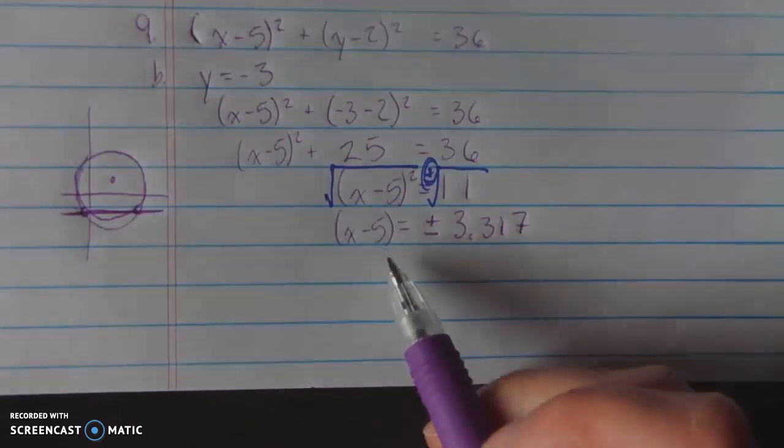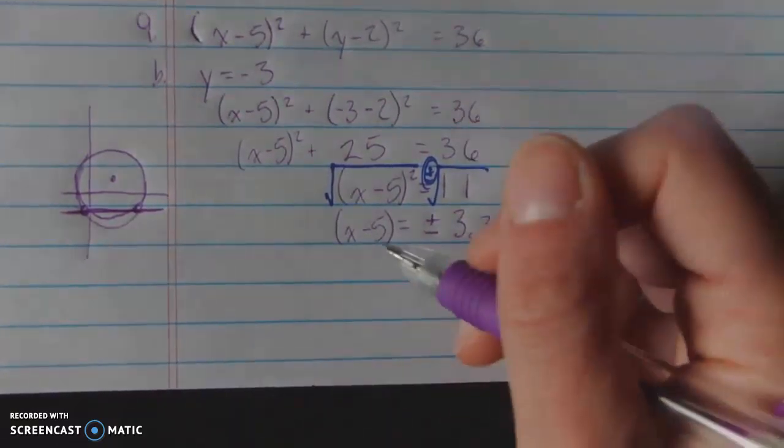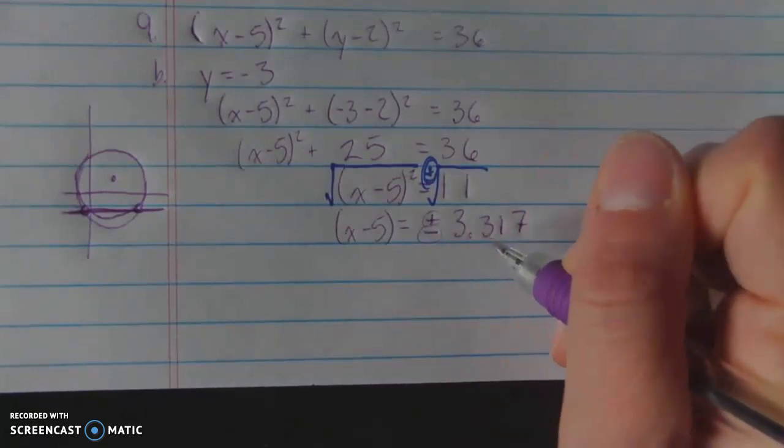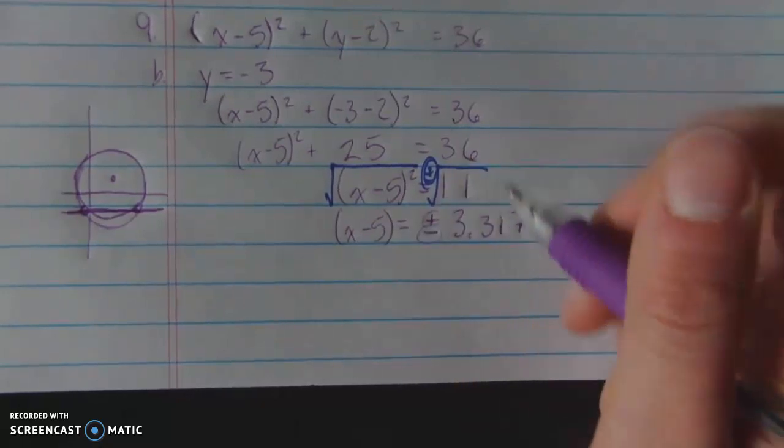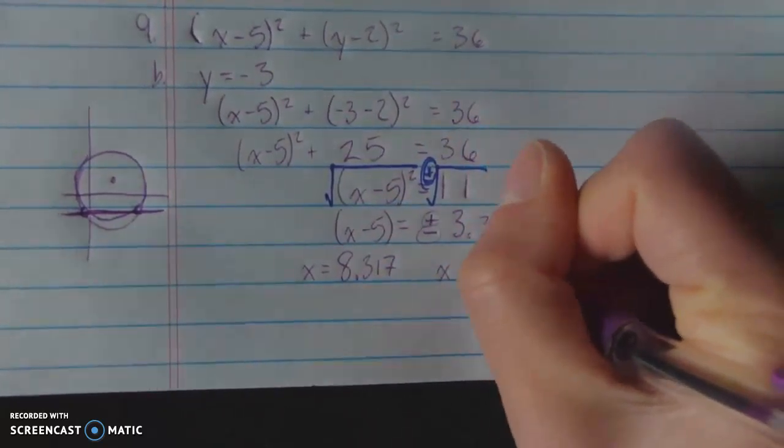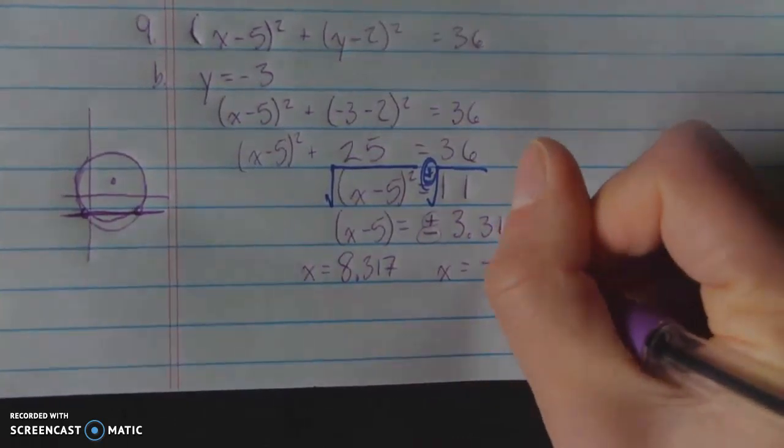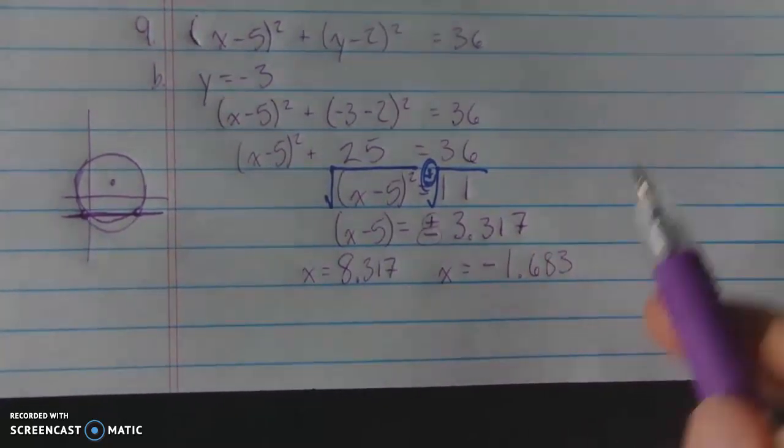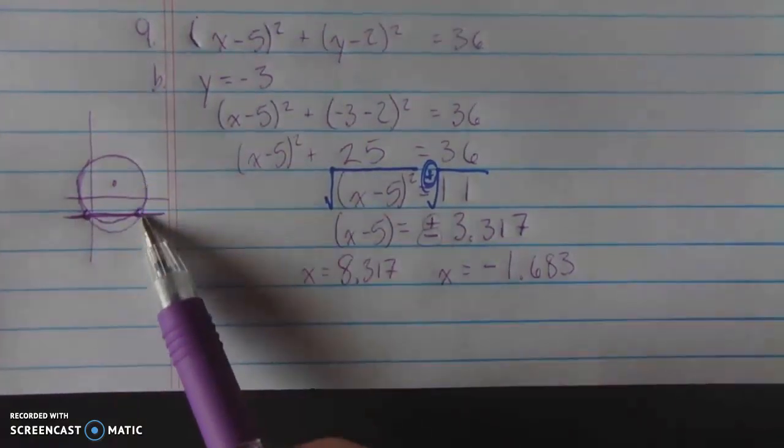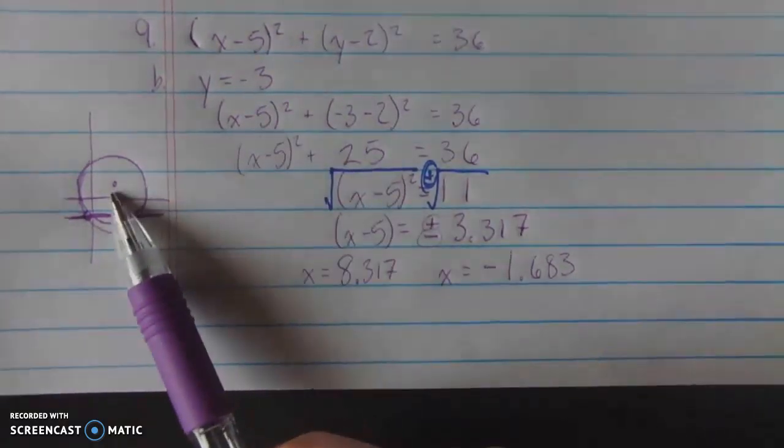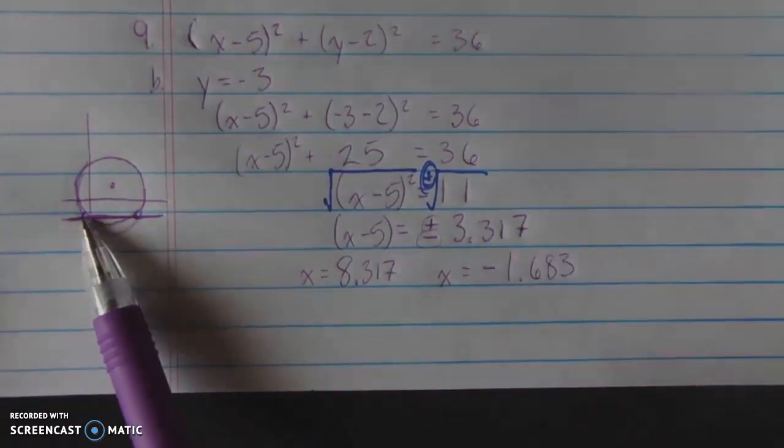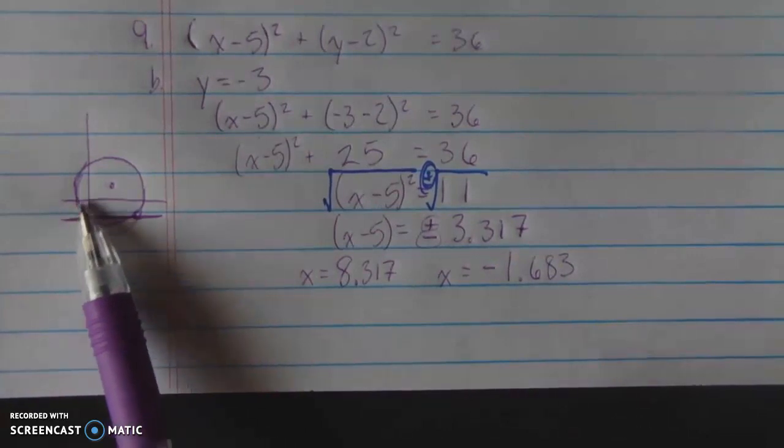And that's equal to our x minus 5. I don't really need these parentheses since they don't tell me anything for order of operations. And what I can do to get x by itself is add 5 to both sides. Don't forget that this represents two numbers. So when I add 5 to a positive 3.317, I end up with x is equal to 8.317. And when I add 5 to a negative 3.317, I end up with x is equal to a negative 1.683. Now, I'm going to just check my sketch to see that this is reasonable.